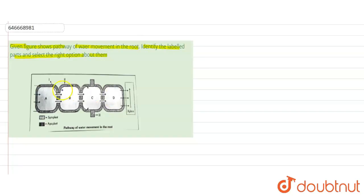So talking about this, this diagram basically shows the movement of water from the root to the different parts, that is xylem.